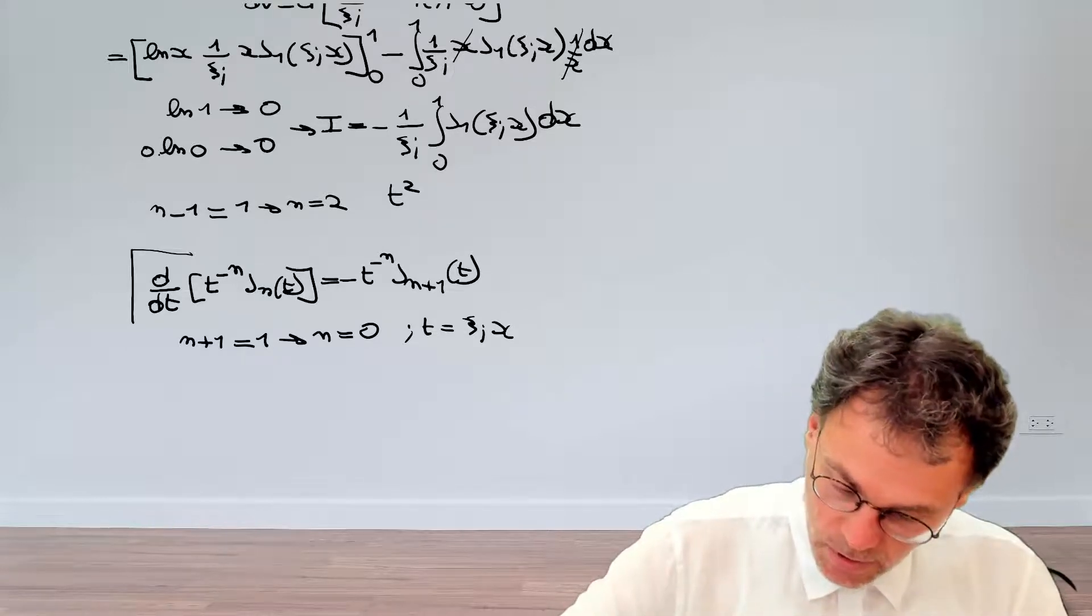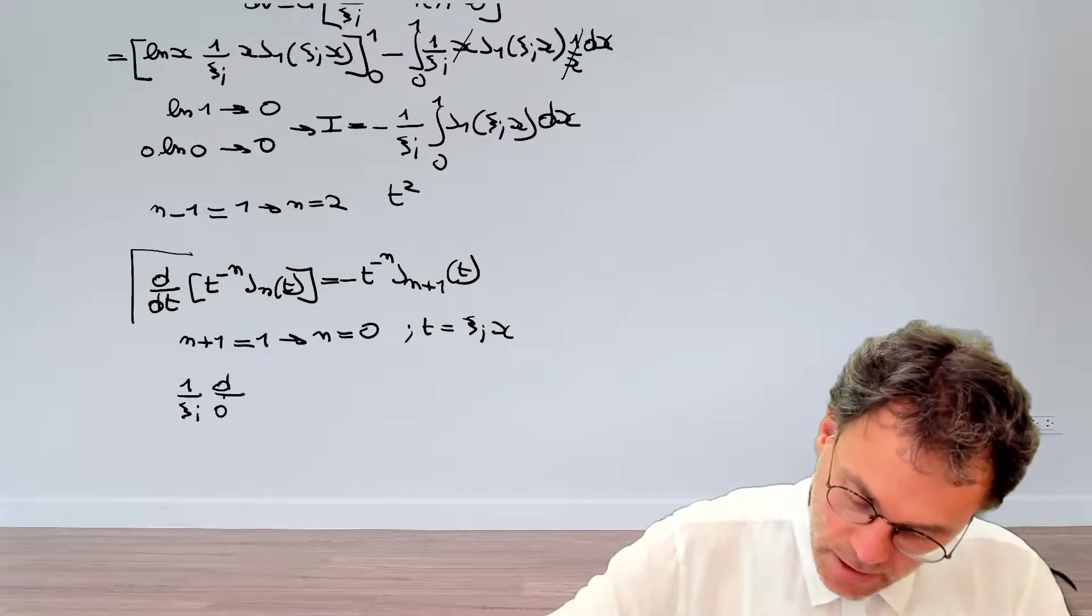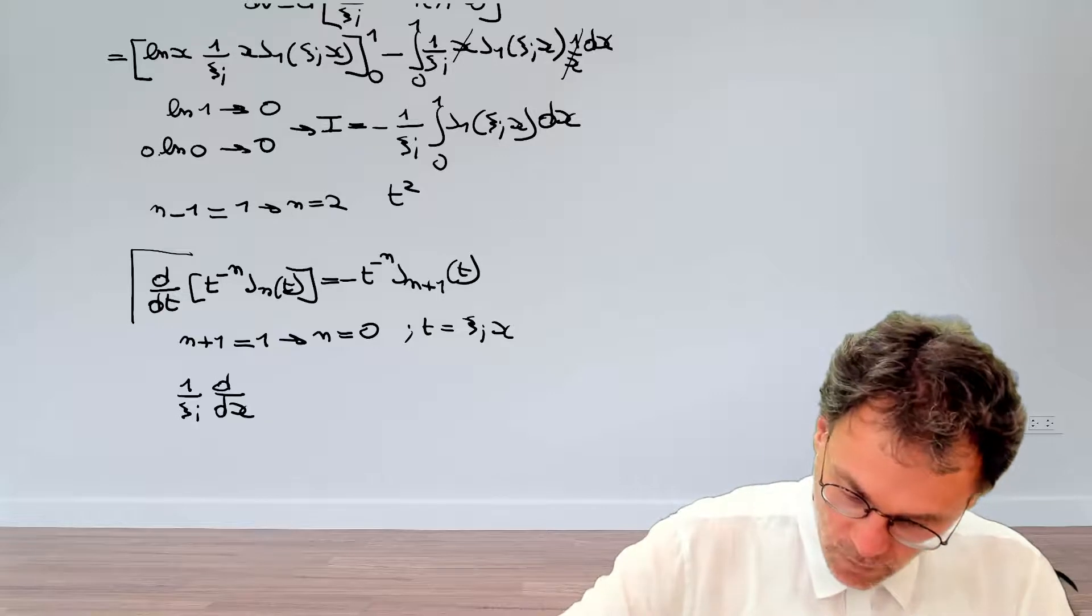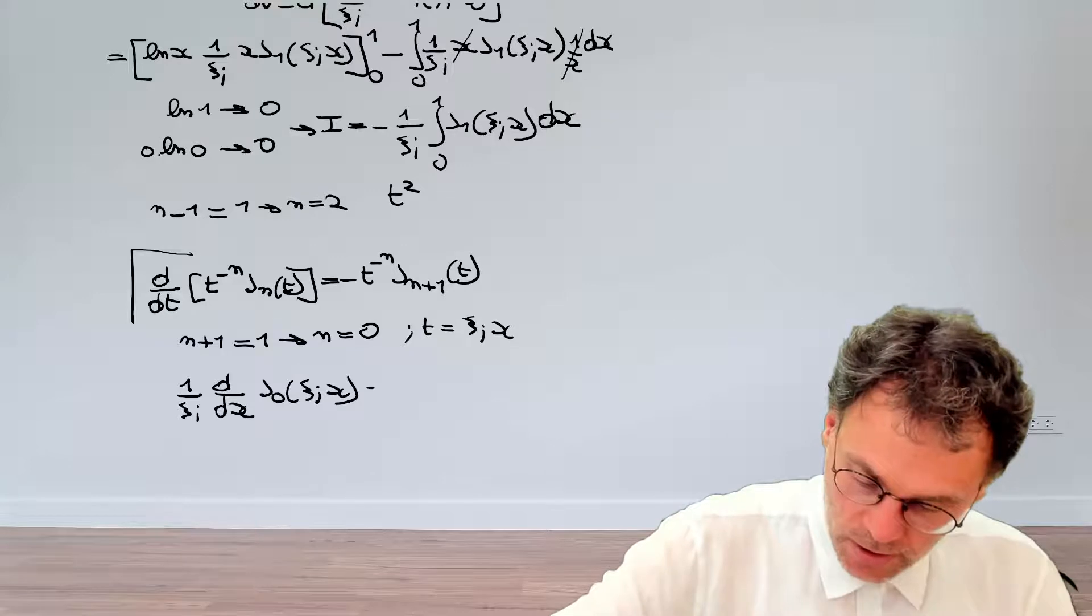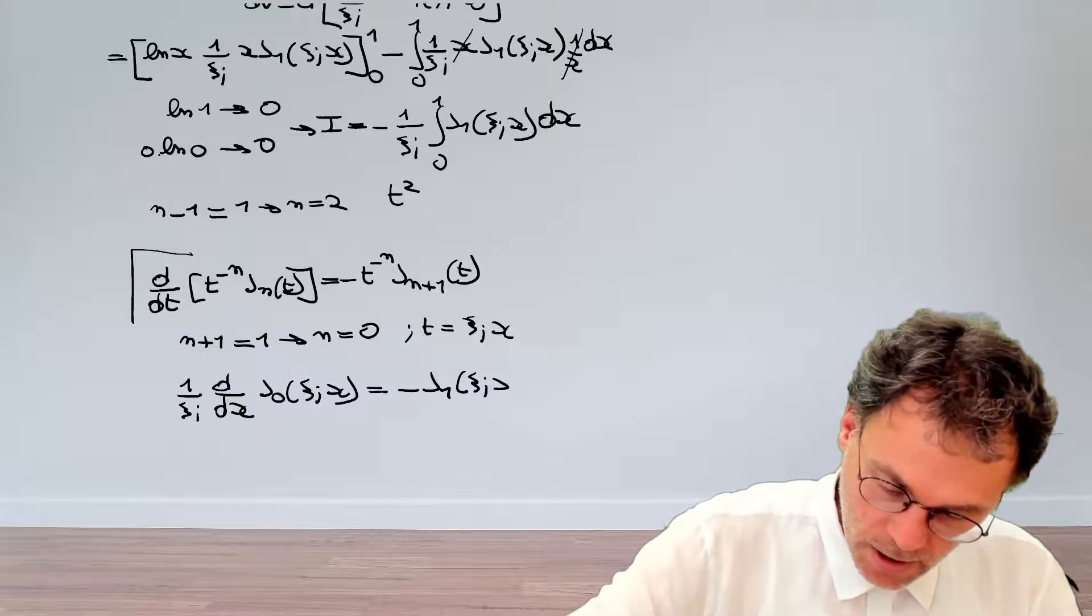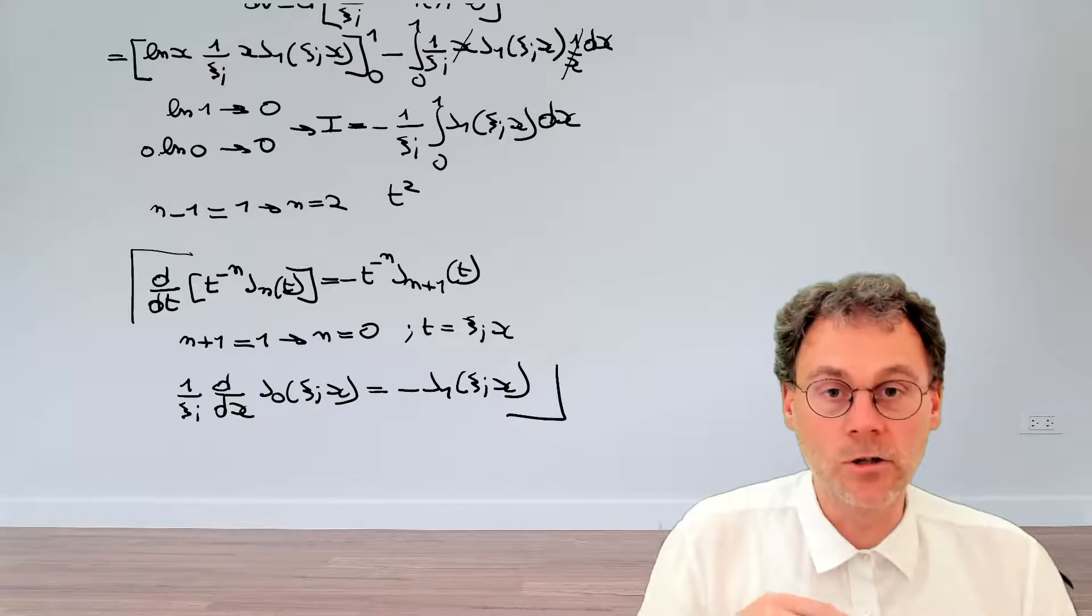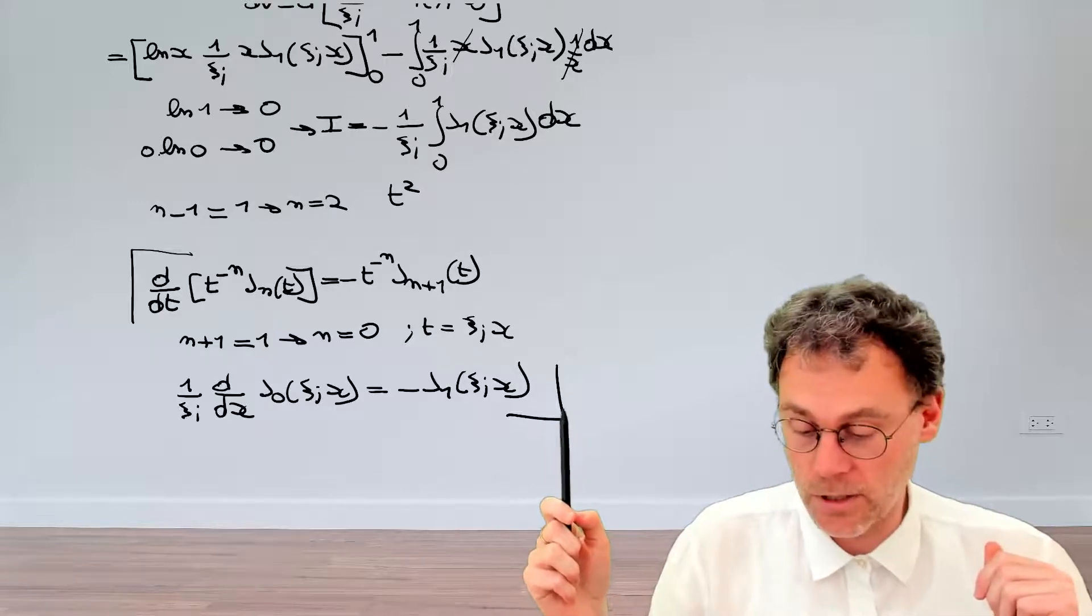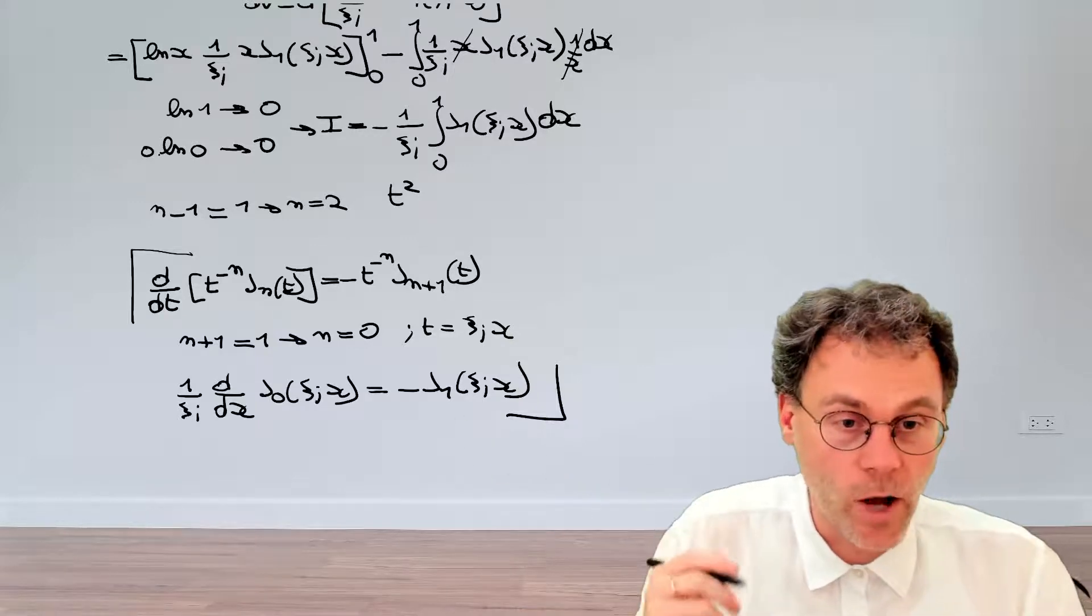Namely, that so d dt becomes 1 over psi i. And then we have d dx. So luckily, t to the power of 0, that's 1. And then we have j1 of psi i x. So that's the left-hand side. And for the right-hand side, we just have j1 psi i of x. So that sounds very good, because if you take the integral here of both sides of the equation, then that's exactly the integral that you're interested in, namely the integral of the Bessel function of order 1. So we can immediately write down the result here. Let's do just that.